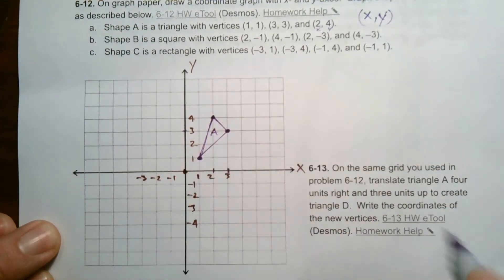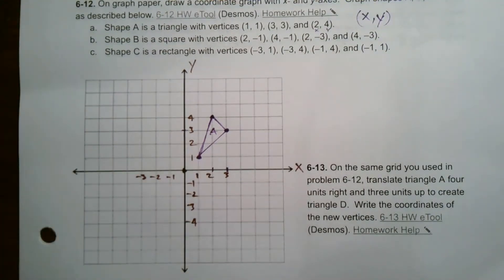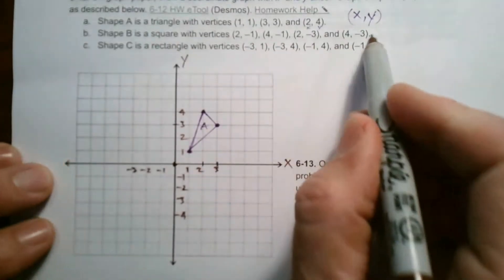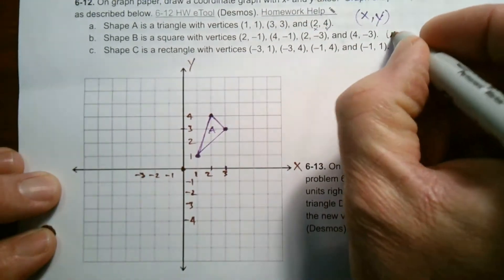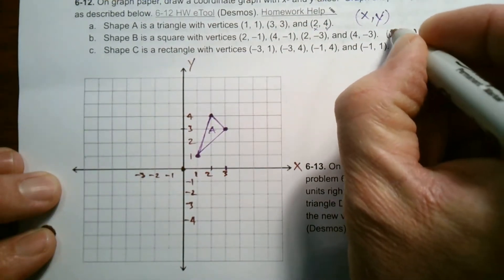Okay, so I've got this is my triangle, and that is shape A. So I'm going to call that A. All right. Now shape B, it says, is a square. So with these vertices, so again, our vertices, x, y is every point.